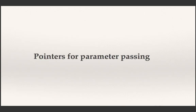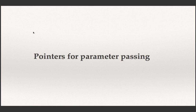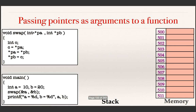We have finished the first two topics: memory allocation for variables, and the basics of pointers in C. Let us move on to the next topic: pointers for parameter passing. This is the same swap example, but the only difference is that rather than passing just a and b, here we pass the address of a and the address of b.